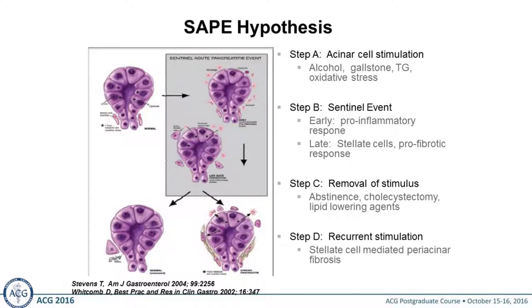It's important to understand: when you have acute recurrent pancreatitis, why is it a big deal? Why do we want to stop this disease or try to prevent a person from having recurrent attacks of pancreatitis? It's based on the sentinel acute pancreatitis event hypothesis — the SAPE hypothesis — popularized by Dave Whitcomb and colleagues. If you have one attack of pancreatitis from alcohol, gallstones, or hyperlipidemia, there's oxidative stress, which sets things into motion. That's called your sentinel event or pro-inflammatory event.